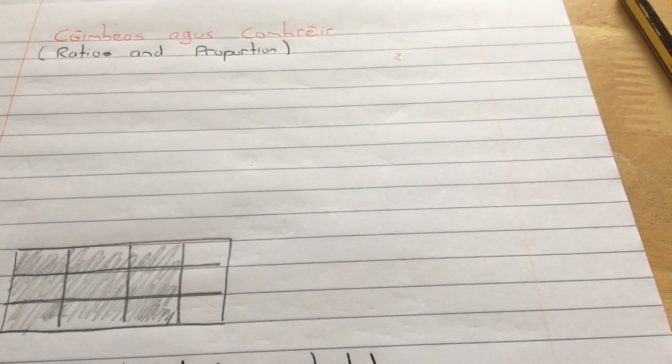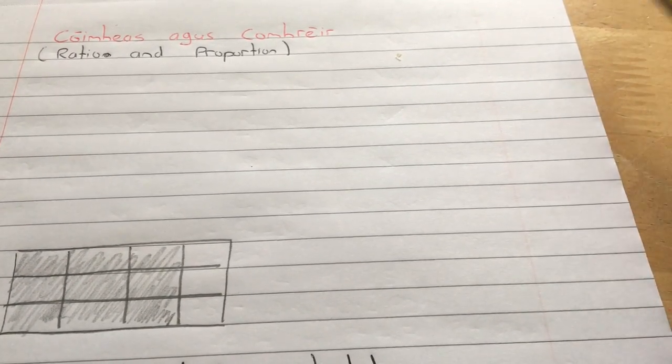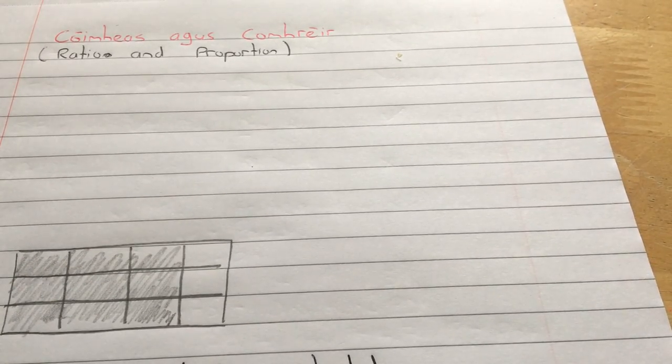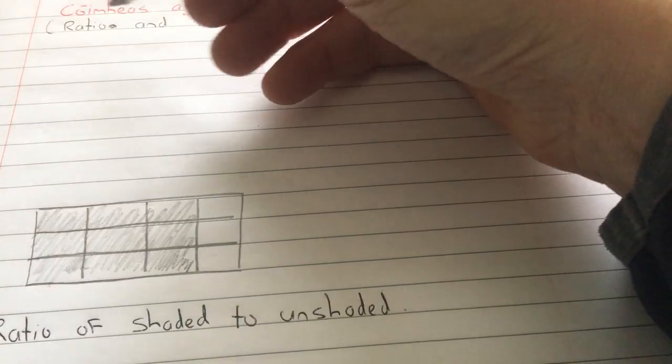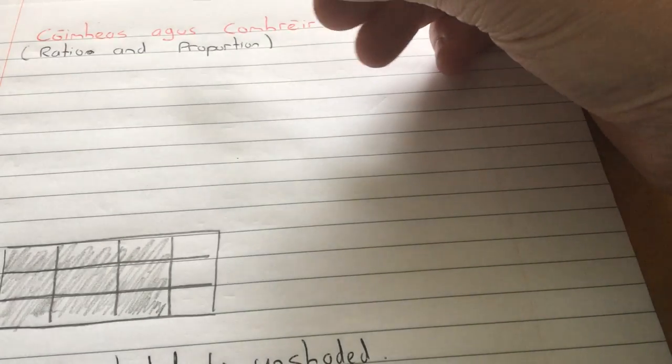For the next few days we're going to look at ratio and proportion. You would have worked on this from primary school. Just to give you an idea of what the word ratio is again. Covass is ratio, and co-rare is proportion.